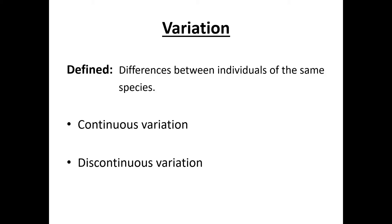So what do we know about variation? It's basically the difference between the individuals of the same species. It can be separated into phenotypic and genotypic variation. The main things are continuous variation and discontinuous variation. Phenotypic variation is caused by genetic and environmental factors, and genetic variation is the difference in genes and alleles between individuals.